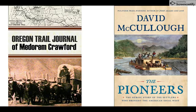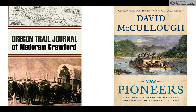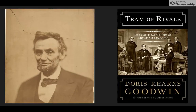Examples can help clarify the different purposes of each type. The journal of someone who traveled on the Oregon Trail would be a primary source, and a book about what life was like on the Oregon Trail would be the secondary source. A photograph of Abraham Lincoln would be considered a primary source, while an analysis of the image and what it reveals about Lincoln at that point in his life would be a secondary source.